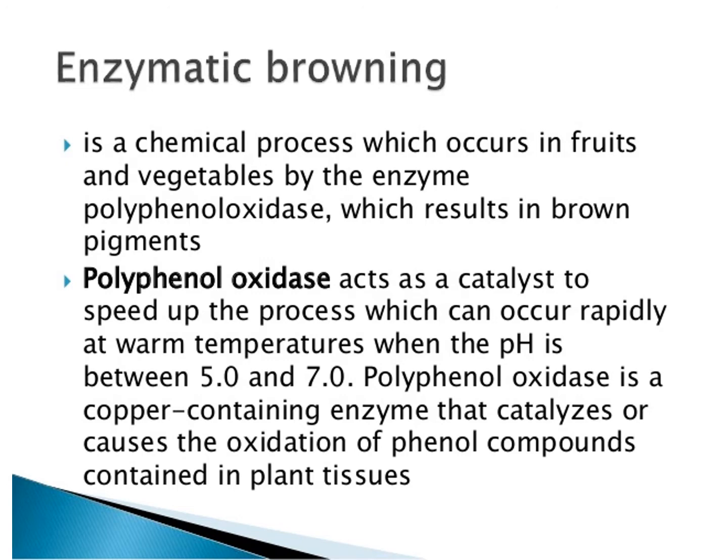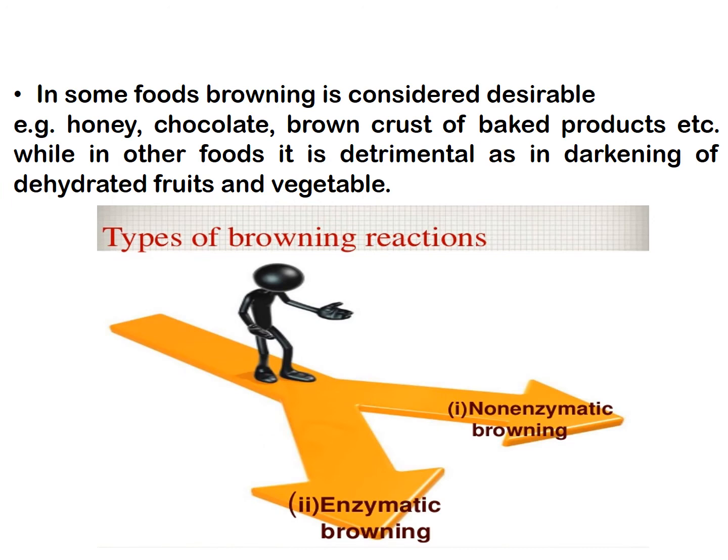In food, browning is considered desirable in some cases, like honey, chocolate, and the brown crust of baked products. While in other foods it is detrimental, as in the darkening of dehydrated fruits and vegetables.